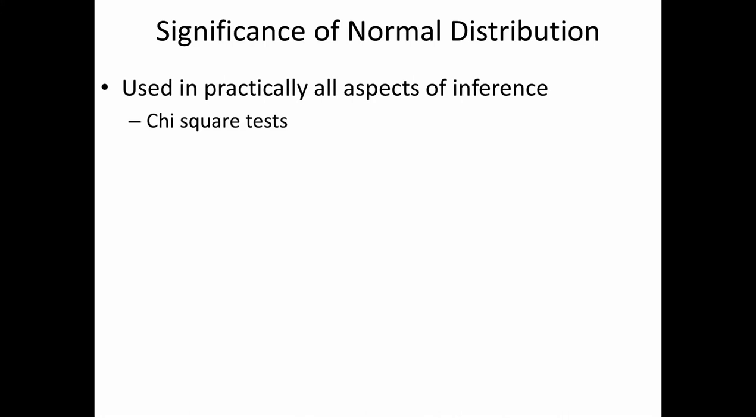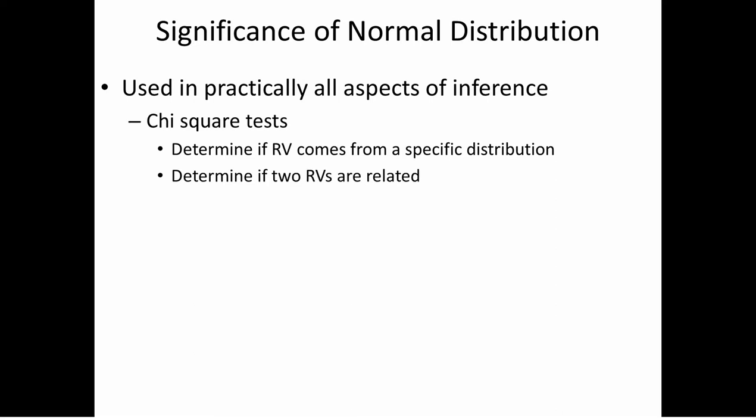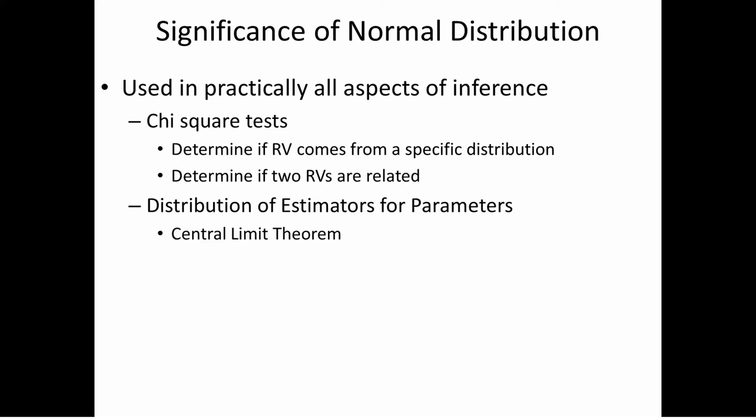It's used practically in all aspects of inference. When we do chi-squared tests to determine if a random variable comes from a specific type of distribution, or if we want to determine if two random variables are related, we use the chi-squared test of association. The normal is related to the chi-squared because the square of standard normals, when added, is a chi-squared random variable. It also comes in when we're looking at the distribution of estimators for parameters. The central limit theorem says that the distribution for estimators is normal.